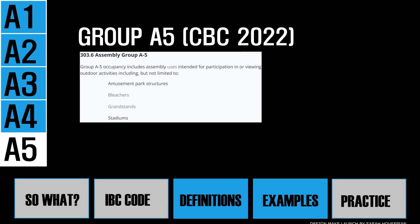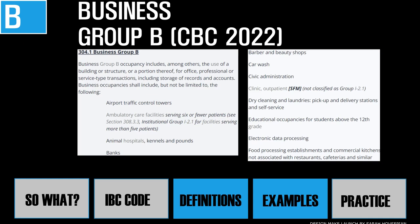Business Group B occupancy includes the use of a building or structure for office, professional, or service-type transactions, including storage of records and accounts. Office buildings are classified as B occupancy. Storage areas within offices, such as file rooms, are not necessarily classified separately — they can remain part of the overall B occupancy, provided the area does not exceed a threshold defined in the code.